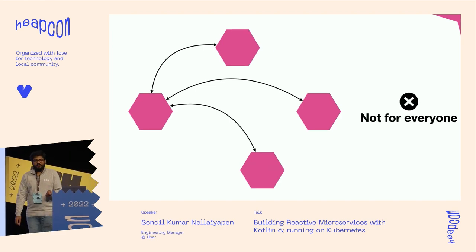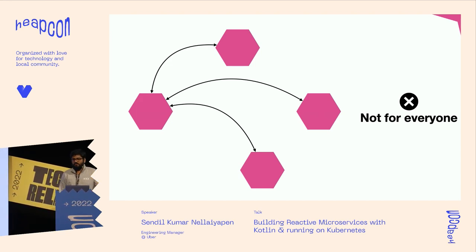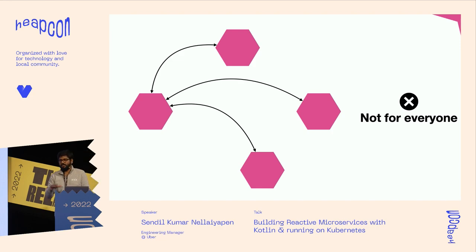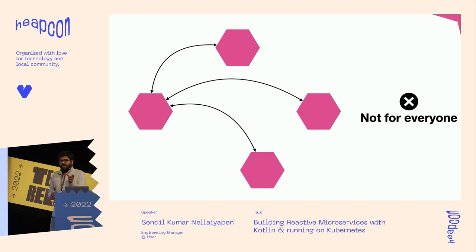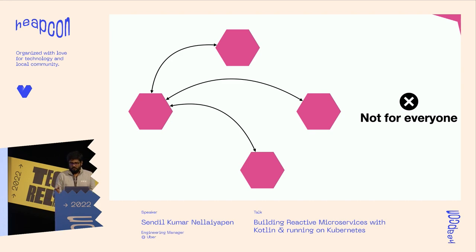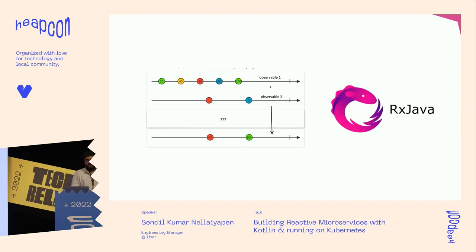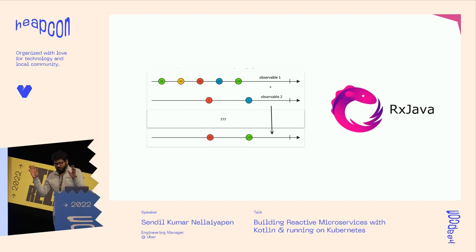Reactive microservices are not for everybody. If you're dealing with 50 to 200 records per second, you don't need reactive microservices — normal microservices will do. But when you're dealing with 750 records per second or more, then you think about building reactive microservices — otherwise it's not worth the added complexity. Whenever we talk about reactive, one library pops up: RxJava, which makes it simpler to build reactive systems.